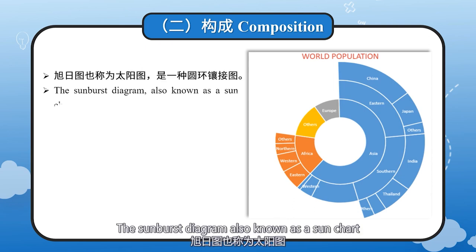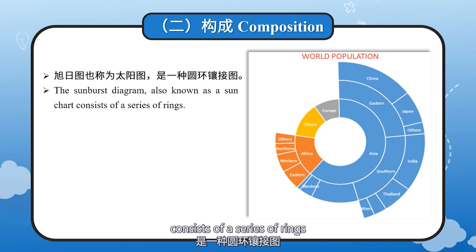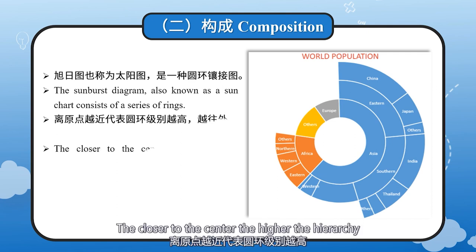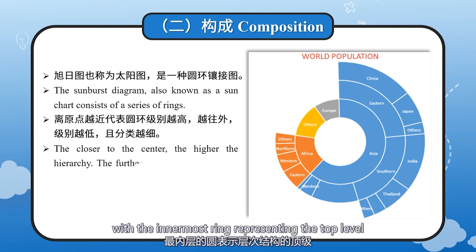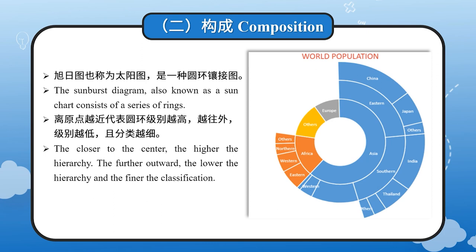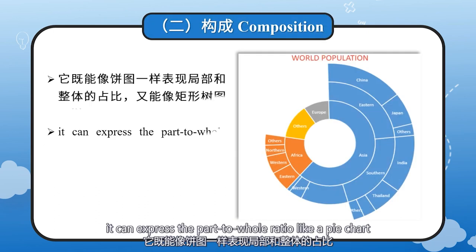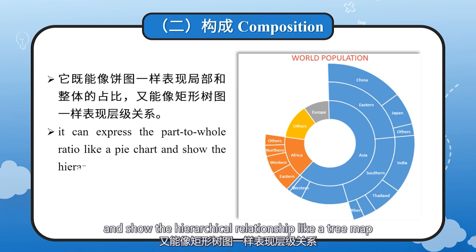The sunburst diagram, also known as a sun chart, consists of a series of rings. In a sunburst diagram, each hierarchy of data is represented by a ring. The closer to the center, the higher the hierarchy, with the innermost ring representing the top level. Each layer displays data proportions. The further outward, the lower the hierarchy, and the finer the classification. Therefore, it can express the part-to-whole ratio like a pie chart, and show the hierarchical relationship like a tree map.